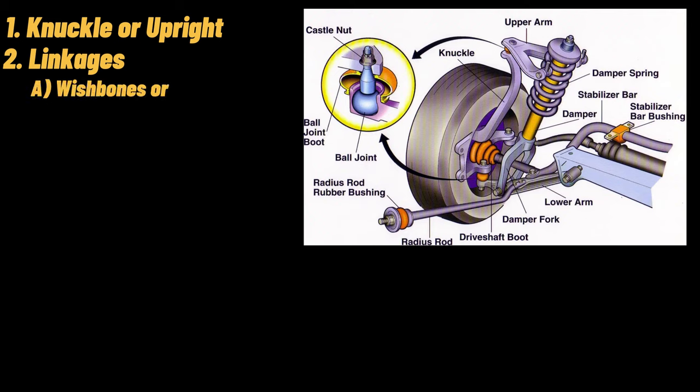A. Wishbones or A-arm. It is a solid linkage that connects the frame of the body and the wheel hub. It is in the shape of the letter A. The top end of the A-arm is attached to the knuckle, which is mounted on the wheel hub, and the rest of the two ends are attached to the frame of the body. Depending on the requirement, a double A-arm can be used.